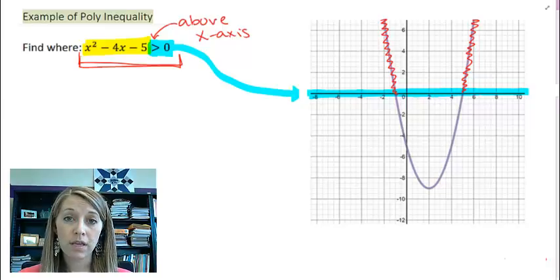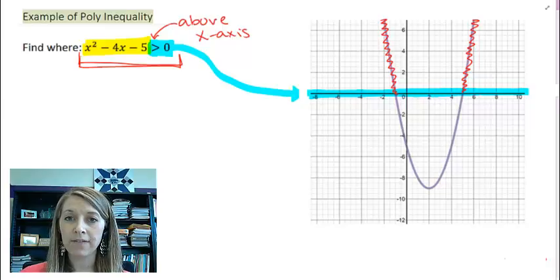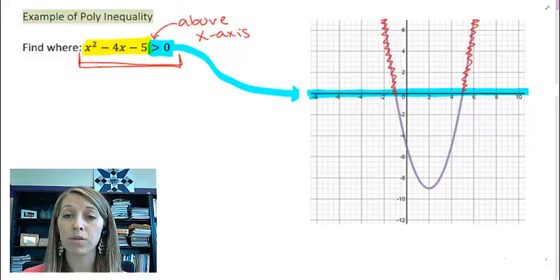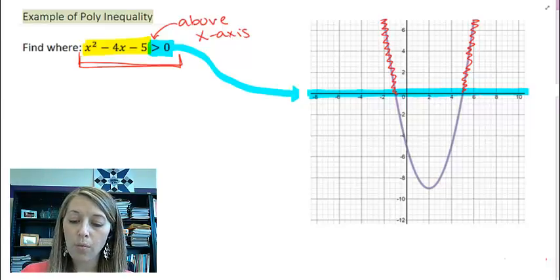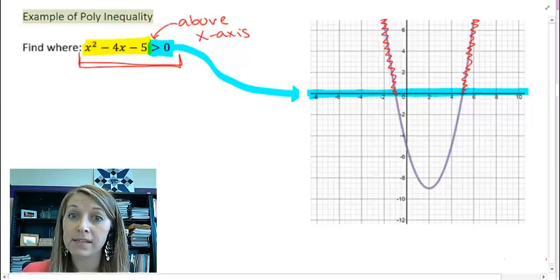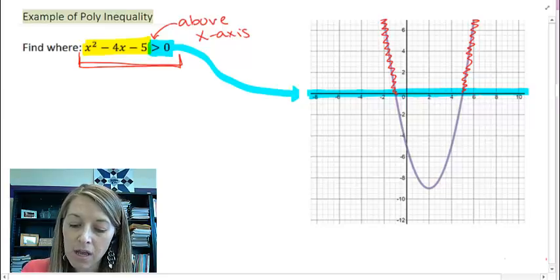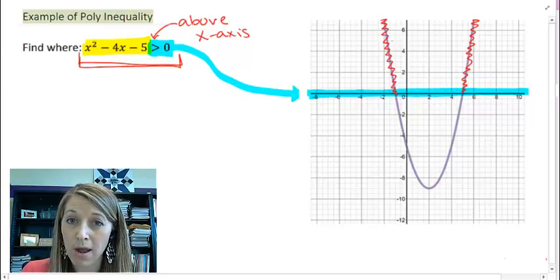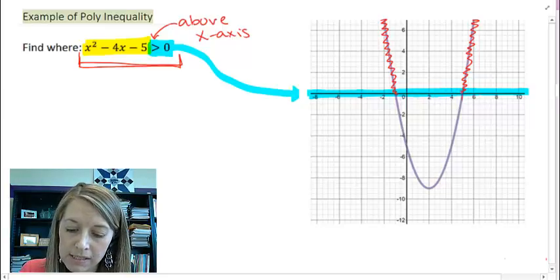All we need to do at this point is identify what our answer is. The answers here will either be an interval notation, which means an interval left to right, smallest to largest, or in set builder notation. You can use whatever is more comfortable with you. If the homework or a quiz or an exam specified, make sure you do what it specifically tells you. Basically, we are looking for all of the x values where our graph is above the x-axis.